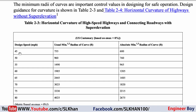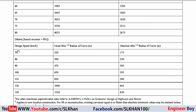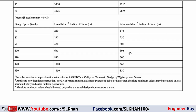For example, at a design speed of 45 mph, the usual minimum radius is 755 feet and the absolute minimum is 600 feet. Looking at the metric table, for a design speed of 70 km/h, the minimum radius of curve is 220 meters, and the absolute minimum is 175 meters.